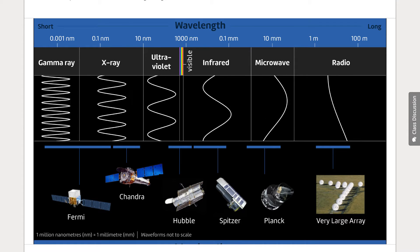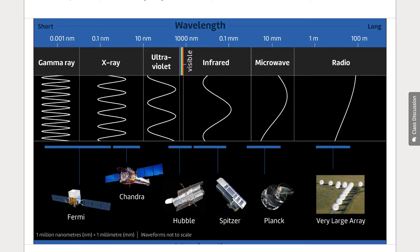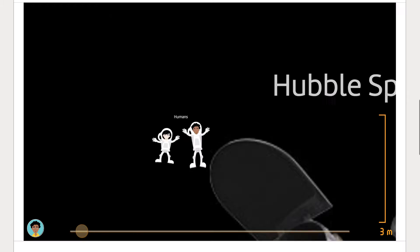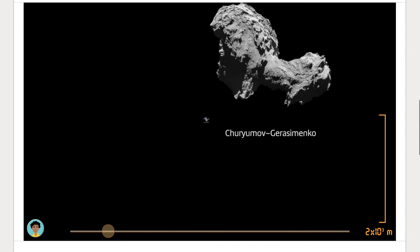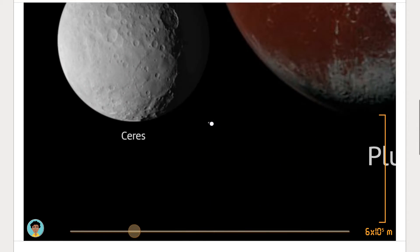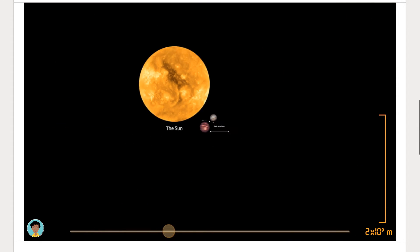In lesson one, we've got a great little animated diagram illustrating how different telescopes detect light at different wavelengths. And at the end of the lesson, there's a simulation for students to explore the relative sizes of things in the Universe. It's a lot of fun.